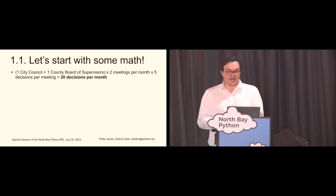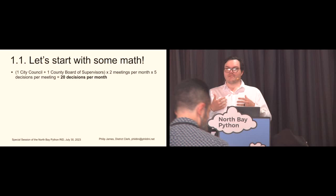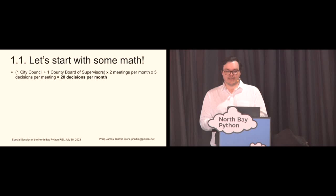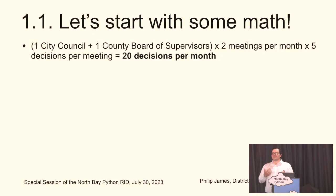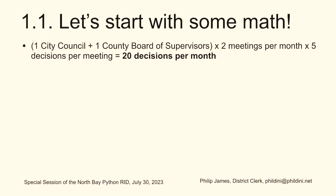Most of us who are living in the United States are going to live in a place that has some sort of city council or township board or alderman, as well as a county board of supervisors. On average, those groups are going to meet twice per month. And so if each of those groups is making five decisions per meeting — which is a little low, but we're being conservative — that's close to the average. Then we get to those groups making 20 decisions per month that affect us.